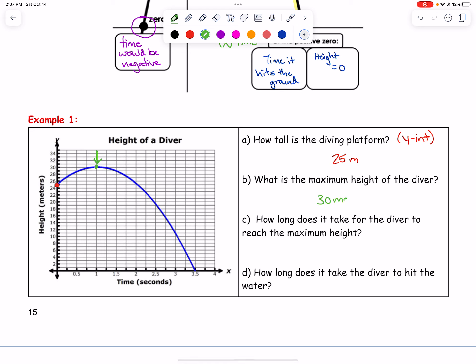How long does it take for the diver to reach the maximum height? That means that's the x-value right there. It could help to write the ordered pair of your vertex or your maximum, which is (1, 30).